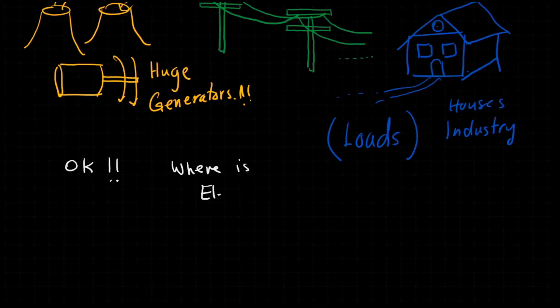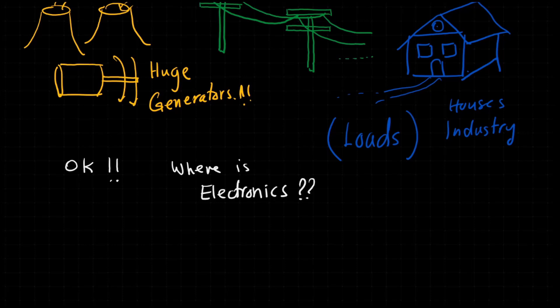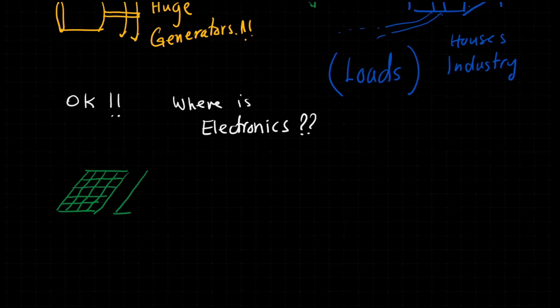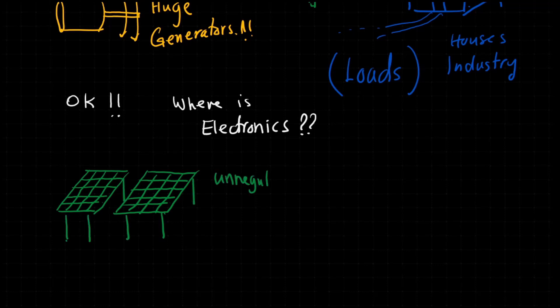But where is electronics here or why do we need electronics? In recent years there are loads of emerging and distributed energy resources coming to the traditional power system, such as renewable energy resources.